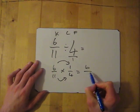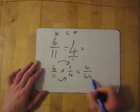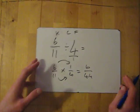So 6 times 1 is 6, 11 times 4 is 44. So it's 6 over 44. Done.